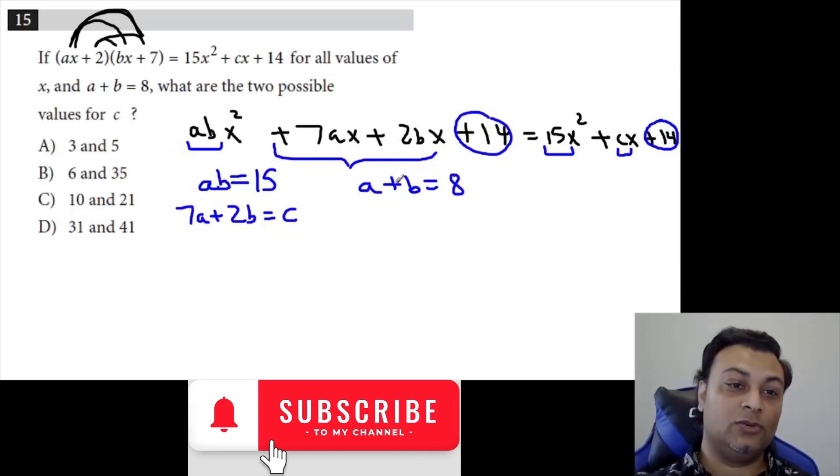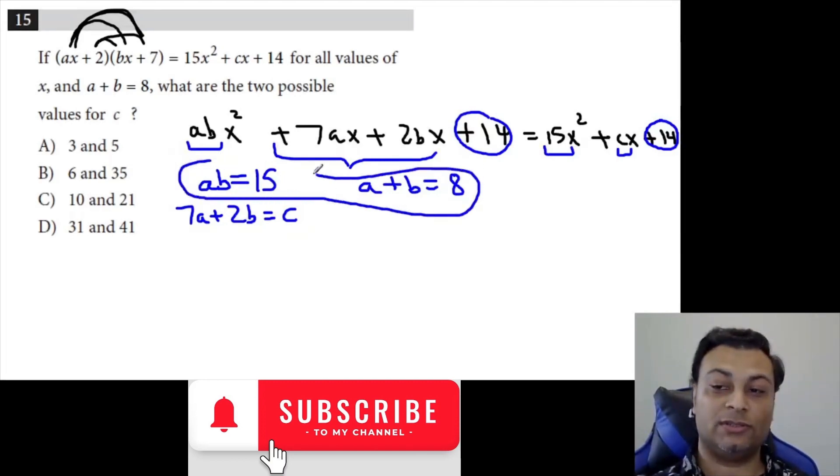Now, two numbers that add up to 8, but they multiply to 15. So just based on these two equations, they have to be 3 and 5. But it's not specific that A must be 3 or B must be 5 or anything like that. So there are two cases.